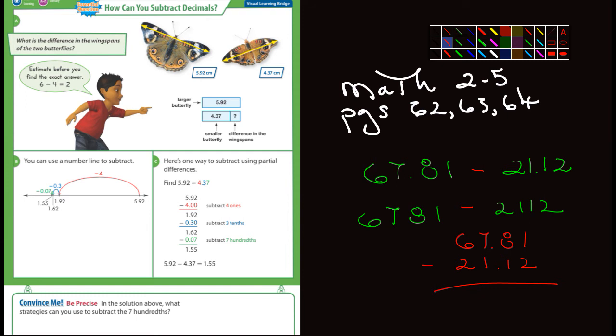In the example here, they're talking about a couple different butterflies. One says that you can use a number line over here to subtract. Here's the larger butterfly, it's 5.92 centimeters, and we're subtracting 4.37.